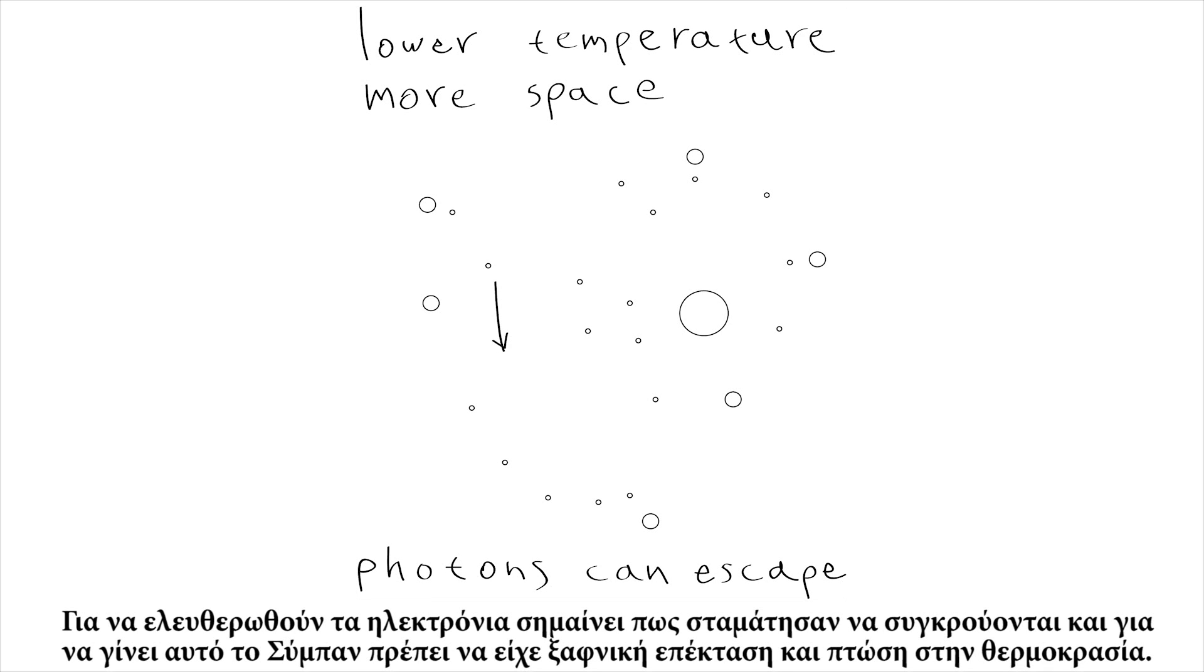For the electrons to be released means that they stopped colliding and for this to happen, the universe must have had a sudden expansion and drop in temperature.